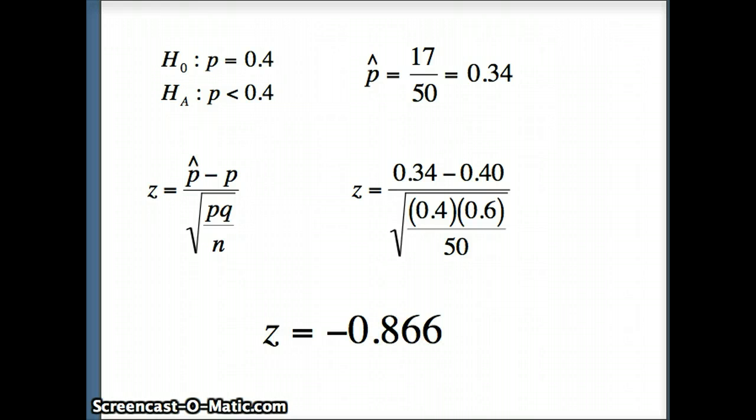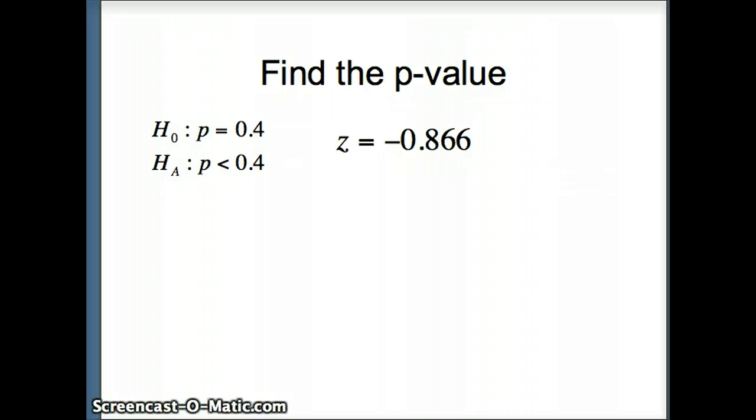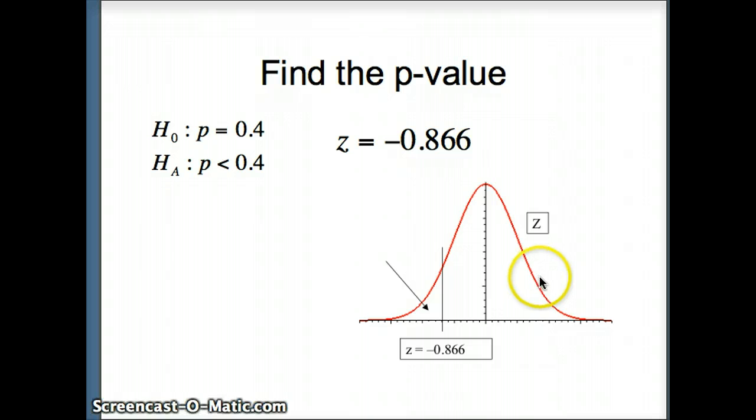So my test statistic z is negative 0.866, and now we want to find the p-value that corresponds to that z. So recognize this is a one-tailed test to the left. We're going to look at our test statistic z, and we're going to find the area to the left of that test statistic. So this is a z-distribution, a standard normal, mean of 0, standard deviation of 1. z is negative 0.866. The p-value will be the area to the left, because of the less than sign, of the test statistic.